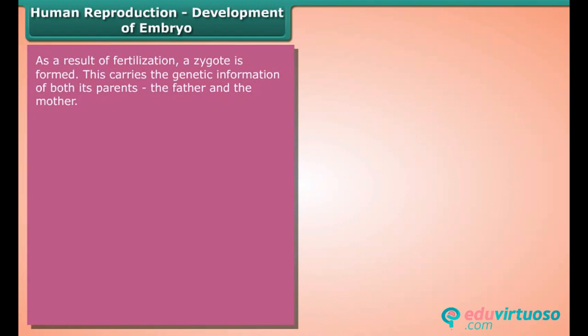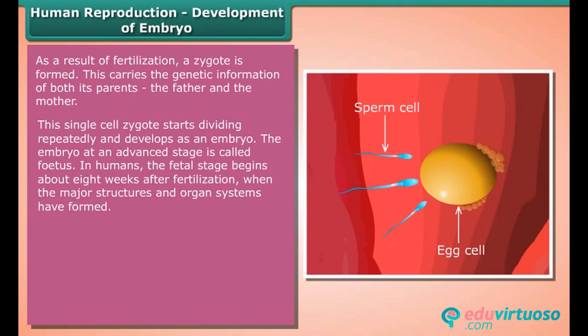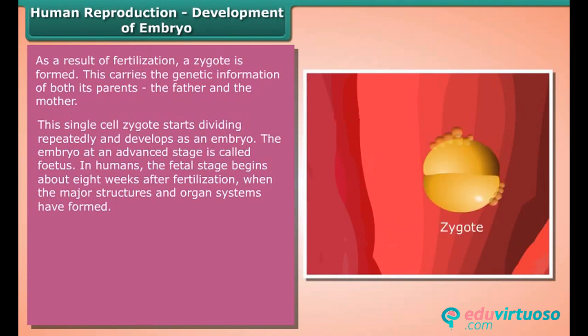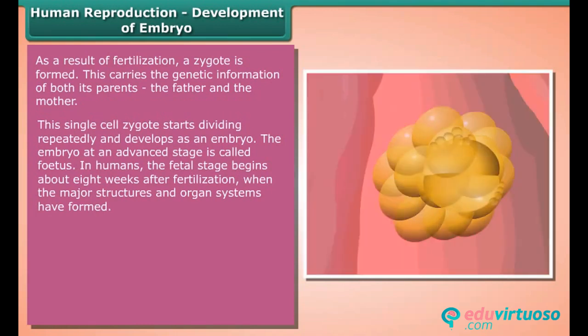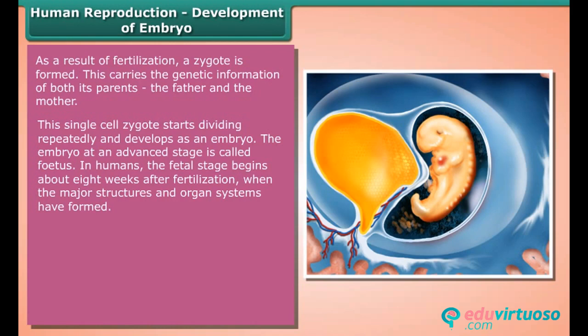As a result of fertilization, a zygote is formed. This carries the genetic information of both parents — the father and the mother. This single-cell zygote starts dividing repeatedly and develops as an embryo. The embryo at an advanced stage is called a fetus. In humans, the fetal stage begins about eight weeks after fertilization, when the major structures and organ systems have formed.